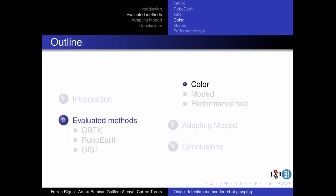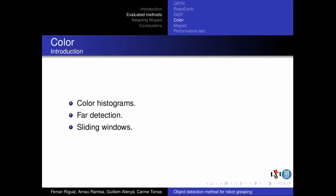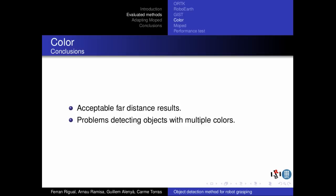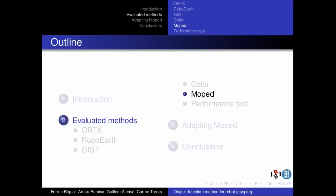The fourth method is Color Detection. Unlike the previous methods, Color Detection uses color histograms to compare the images and the trained models. As GIST, it also focuses on the far detection problem and uses the Sliding Windows technique. Color Detection offers better results but still doesn't solve the far detection problem, and has problems when dealing with multicolored objects.